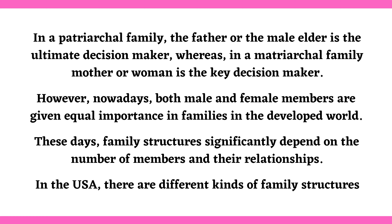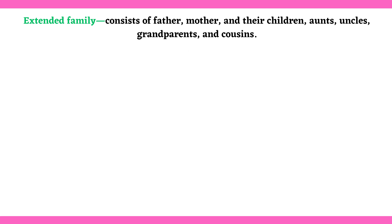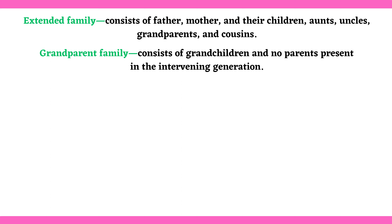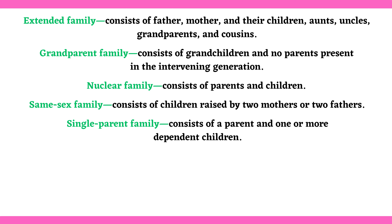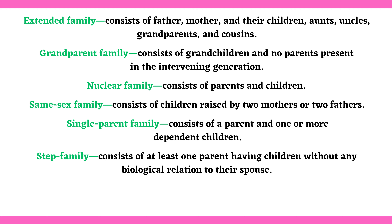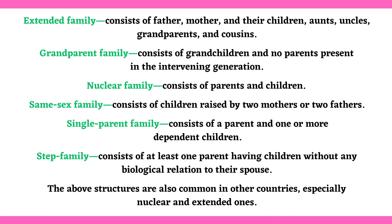In the USA, there are different kinds of family structures. Extended family consists of father, mother, and their children, aunts, uncles, grandparents, and cousins. Grandparent family consists of grandchildren and no parents present in the intervening generation. Nuclear family consists of parents and children. Same-sex family consists of children raised by two mothers or two fathers. Single-parent family consists of a parent and one or more dependent children. Step-family consists of at least one parent having children without any biological relation to their spouse. The above structures are also common in other countries, especially nuclear and extended ones.